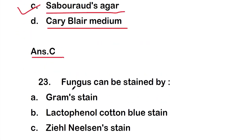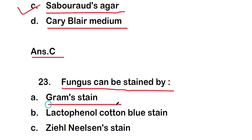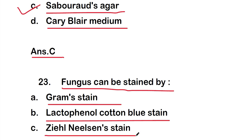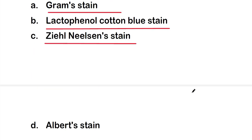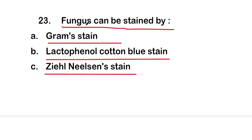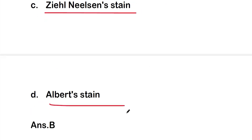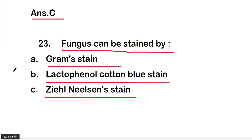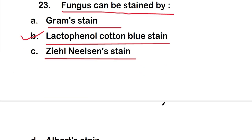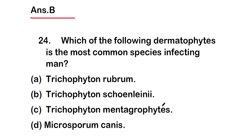Question 23: Fungus can be stained by option A - Gram stain, option B - Lacto phenol cotton blue stain, option C - Ziehl-Neelsen stain, or option D - Albert stain. The right answer is option B, Lacto phenol cotton blue stain.